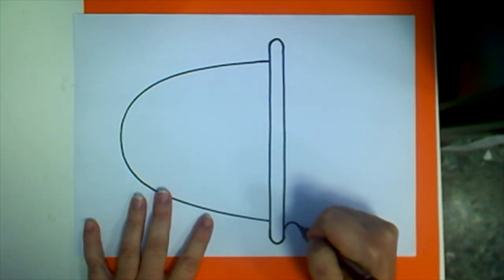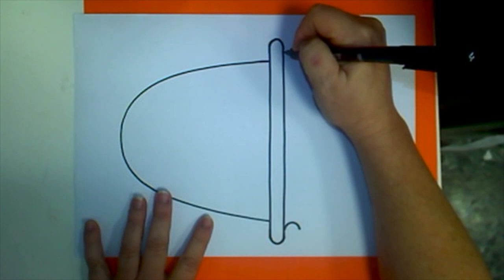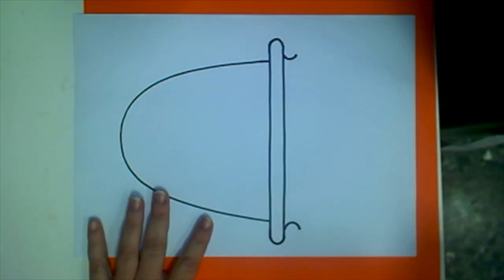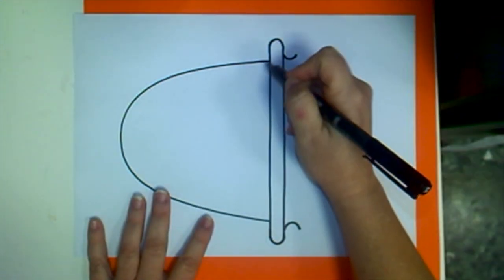Now next to that shape you're going to draw two curved lines that are going in towards the drawing. The one at the top is going to bend down and the one at the bottom is going to bend up.